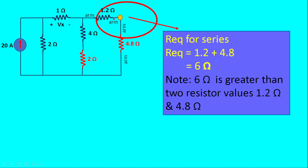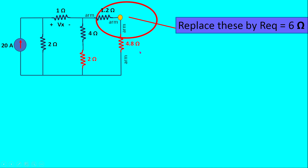In our circuit, the 1.2 ohm and 4.8 ohm resistances are connected in series — they share only one common connection between them, while the other terminals connect to different parts of the circuit. So we add both values: 1.2 plus 4.8 equals 6 ohms. We can notice that 6 ohms is greater than both 1.2 and 4.8, as expected. These two resistors are replaced by a single 6 ohm resistor.